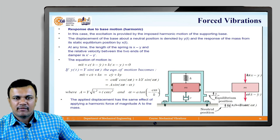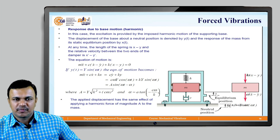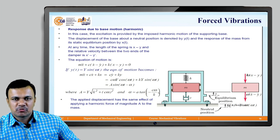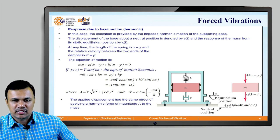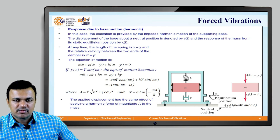Here we have a mass, a spring, and a damper, and together they produce the excitation. The displacement of the base about a neutral position is denoted by y, which is a function of time, and the response of the mass from its static equilibrium position is represented by x, also a function of time. The spring experiences two displacements: x at the mass and y at the frame. The spring deformation is x minus y and the relative velocity across the damper is x-dot minus y-dot.